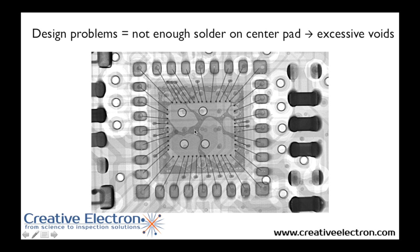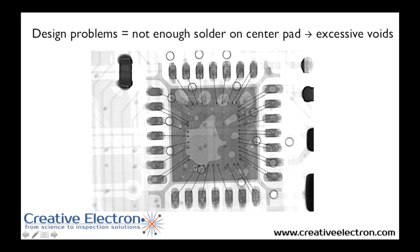The opposite problem happens when not enough solder is deposited by the stencil — there's not enough opening in the stencil to put enough solder to create a reliable connection between the part and the board. In this case you can see a very large amount of voiding, caused by the lack of solder to cover the large area of the QFN. Here's another example where insufficient solder causes excessive voiding, represented by the lighter areas you can see.